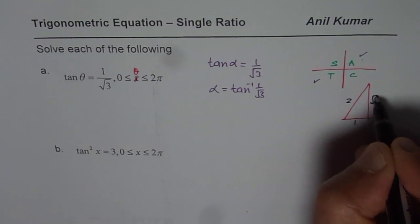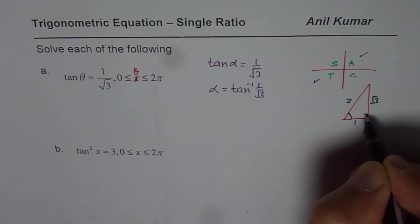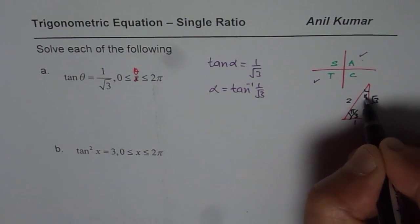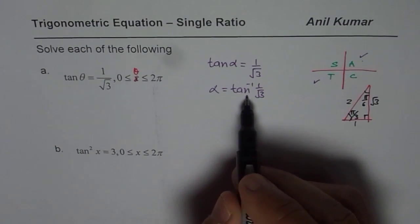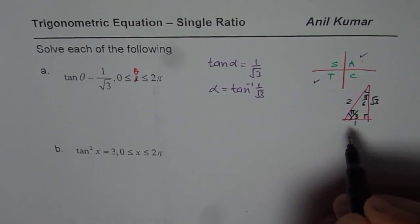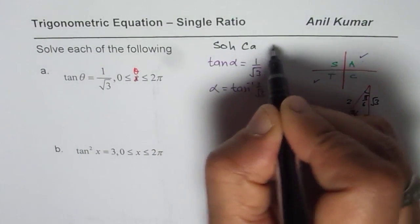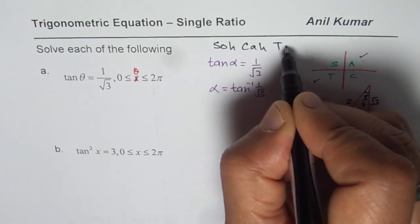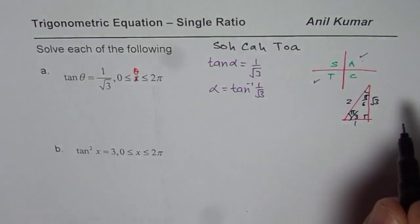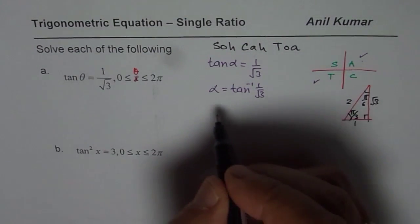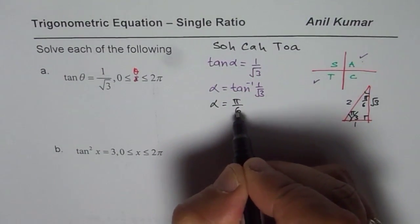It is not that you have to remember. Tan is opposite over adjacent. We need 1 over square root 3, so we are looking from pi by 6 angle. So we get alpha equals pi by 6. That is the acute angle which we have got.